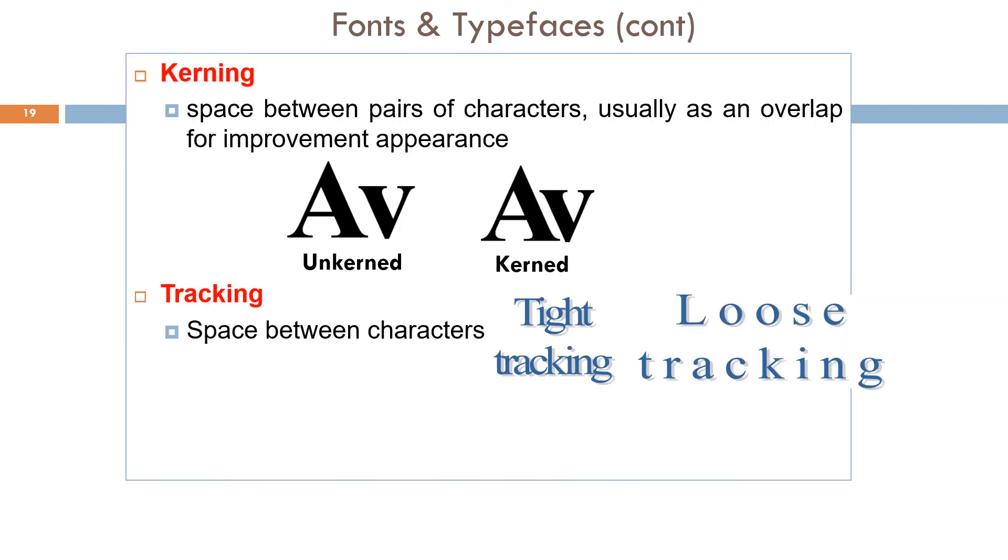This is example of kerning. We may see the space between pair of characters and as overlap for improvement of appearance. Left sample is unkerned, while on the right is kerned. Tracking is also known as space between characters. It can make text appear more airy or more dense and affects the appearance and readability of text.